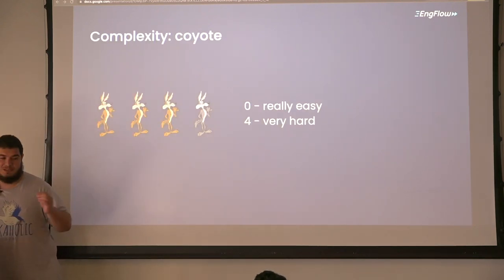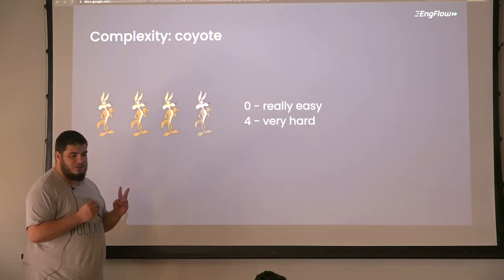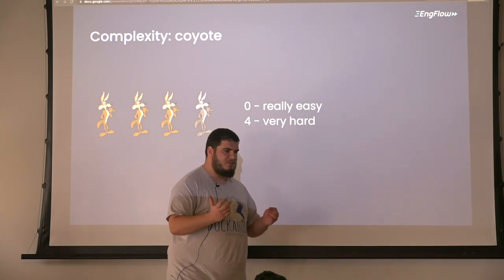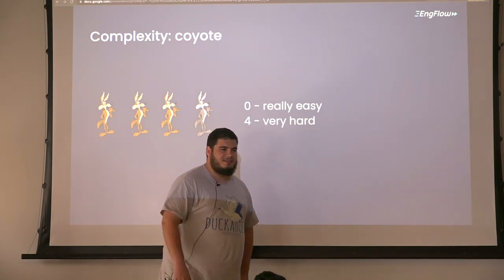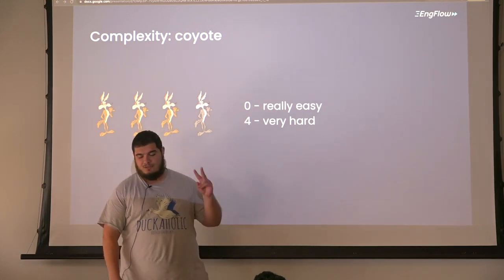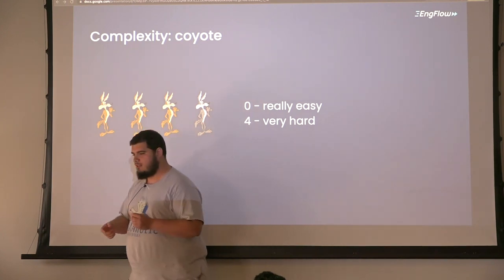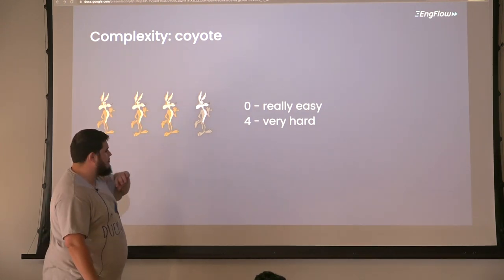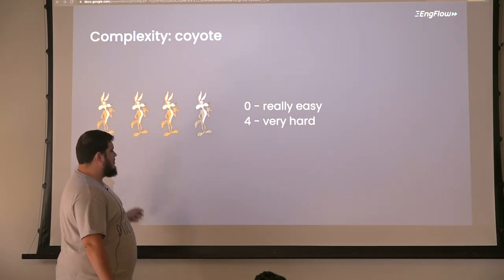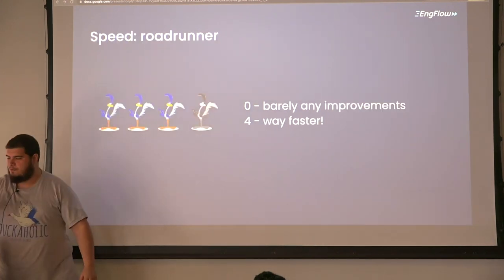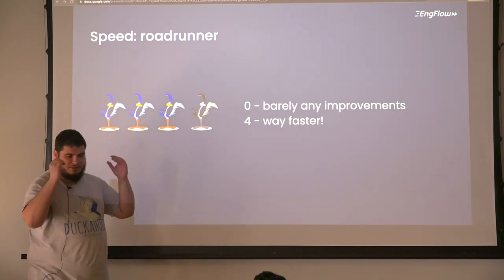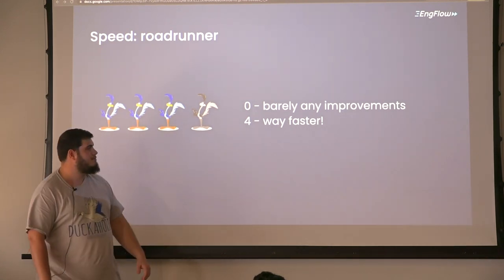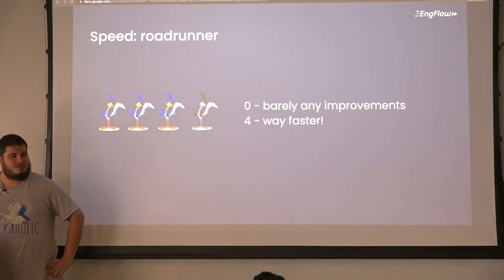Now that we know why we should speed up a build, I want to introduce two mnemonic devices. I'm going to be giving lots of tips and tricks, and some best practices on how to make builds faster. The two devices are Coyote, representative of complexity — zero Coyotes is trivial, four Coyotes is really hard — and for speed-up, we use the Roadrunner. Each slide will have a Coyote score and a Roadrunner score: no Roadrunners means really slow, four Roadrunners means much, much faster.